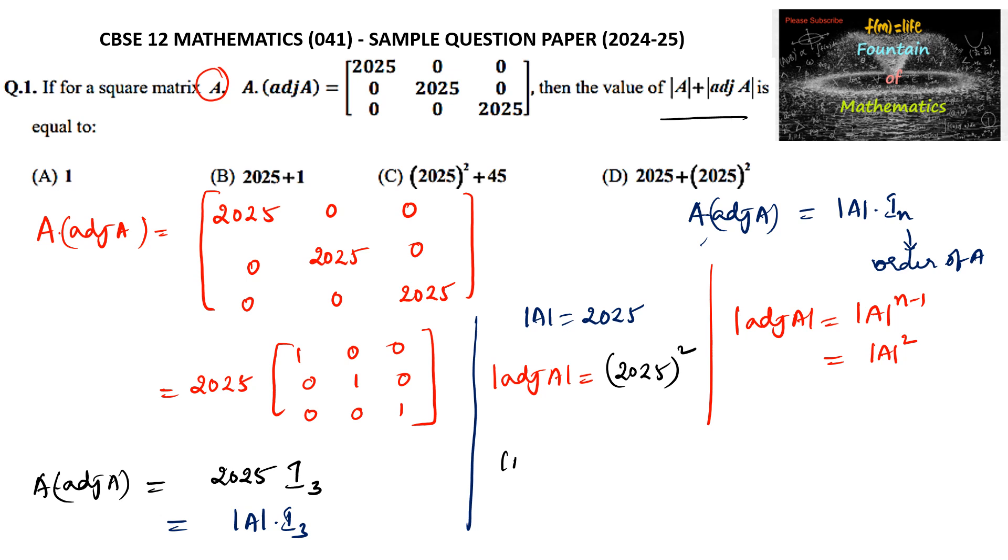Finally, we can say that determinant of A plus determinant of adjoint of A is equal to 2025 plus 2025 whole square, which is our option D. So option D is the answer.